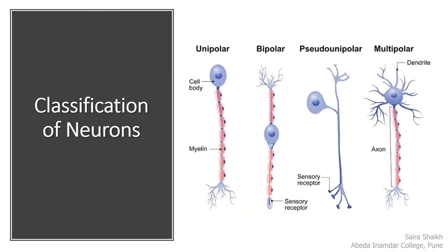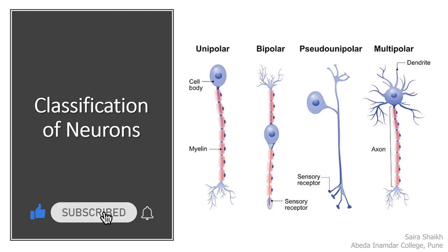Now let us move on to classification of neurons. Neurons are classified on the basis of the number of branches present. They are unipolar, bipolar, pseudo-unipolar, and multipolar. In a unipolar neuron, a single axis arises from the cell body — that is why they are called unipolar, as 'uni' means single.